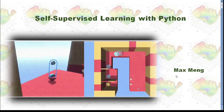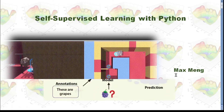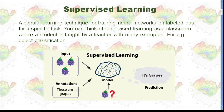This time I'm going to talk about self-supervised learning with Python. There are many types of machine learning method. We have supervised learning — that means we have a dataset and all those data are labeled. In this example, we have all the grips and we know they are grips. And then we use all those data as input to feed into our model and try to make predictions.